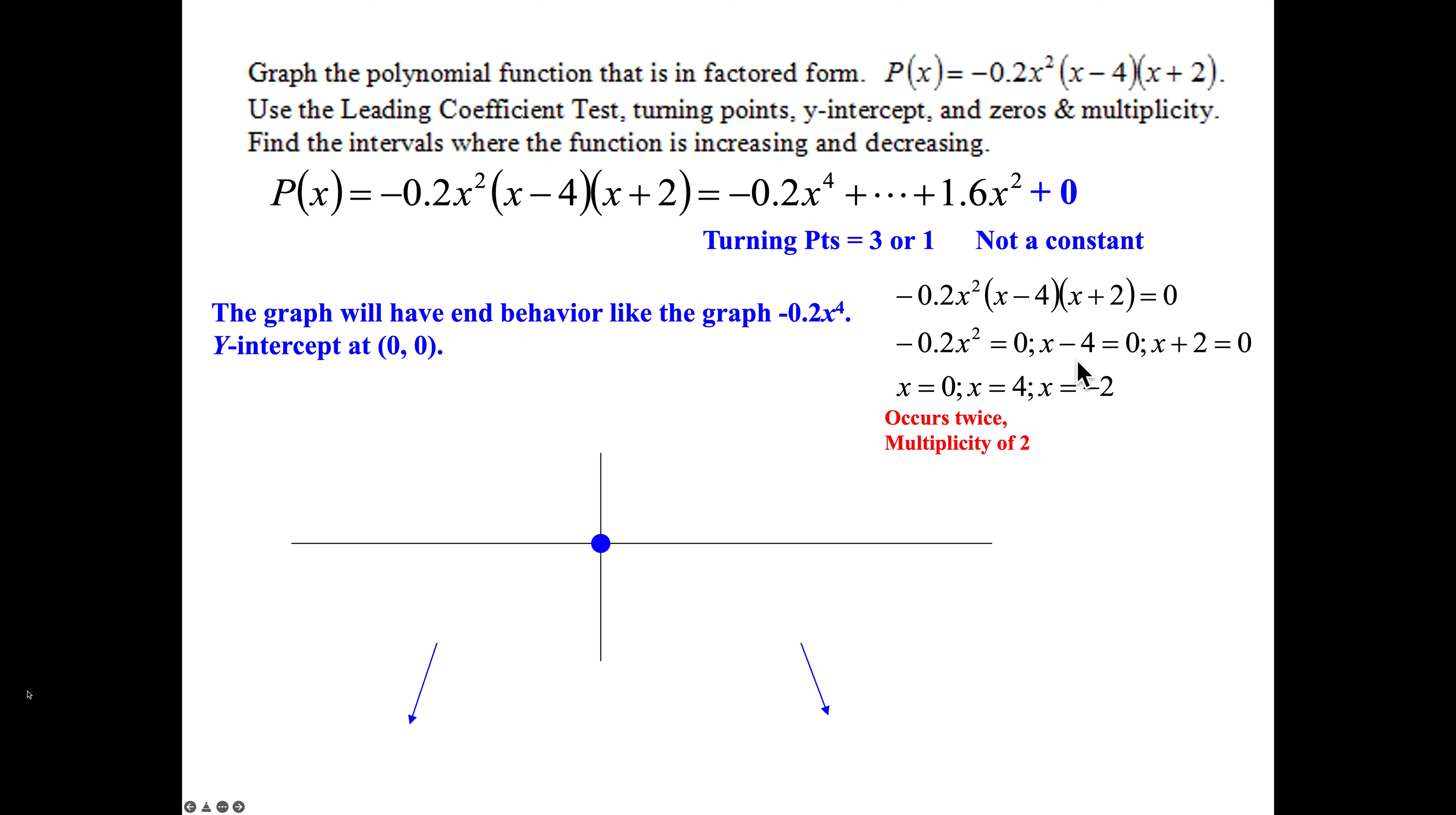The x minus 4, we set that equal to 0, gives you 4. The x plus 2 set equal to 0 gives you negative 2. Well, since those binomials are to a power of 1, they occurred once. x raised to the power of 2, that 0 occurs twice. There's no multiplicity of 3 or higher, so now you know you're going to have 3 turning points.